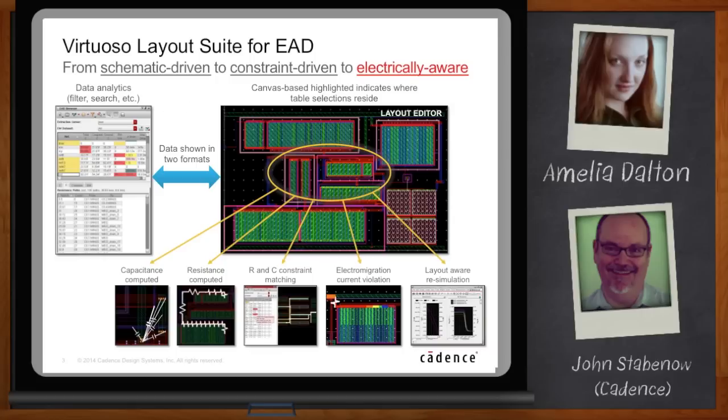There are visualizations of capacitors and resistors that are really good for the circuit designer during the debug phase. When you get your layout back and do an extraction re-simulation run and have a failure, EAD allows the circuit designer to debug in a much easier way. The RC constraint matching is a really powerful tool — you can say you want a differential input pair to match capacitance within a 1% tolerance. You set that on your schematic side, and on the layout side EAD does the real-time RC extraction. As I draw, I get immediate feedback on whether I'm meeting your constraint.